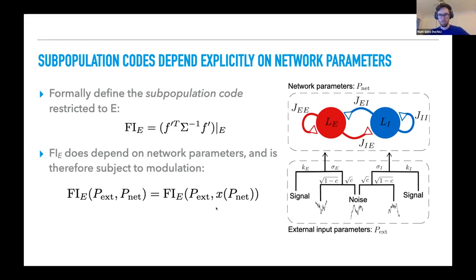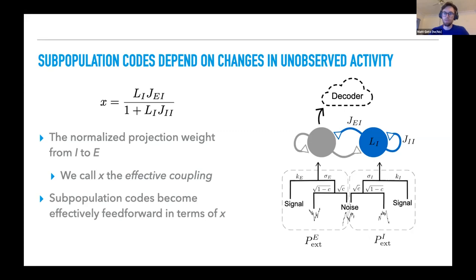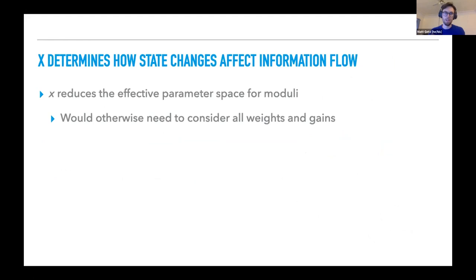But if we formally define our subpopulation code restricted to E as FIE, then now when we write the expression as a function of these network parameters, we see that the dependence on network parameters is maintained, but depends through some function X. X is given by this expression here. And what you notice is that X is only composed of parameters that are highlighted in blue here, and those correspond to the inhibitory population, despite the fact that E is what's being decoded from. As a result of this, we call X the normalized, or X really is the normalized projection weight from I to E. So we call X the effective coupling. Now, if we split the input parameters into those which act on E and those which act on I, then the subpopulation codes can become effectively feed forward in terms of X, and we can take this complicated recurrent network and rewrite it like this.